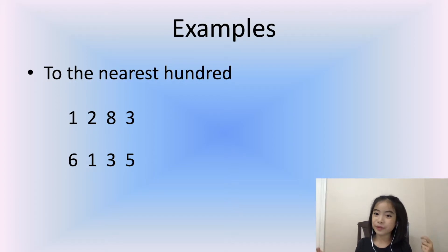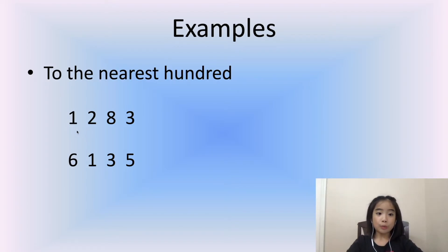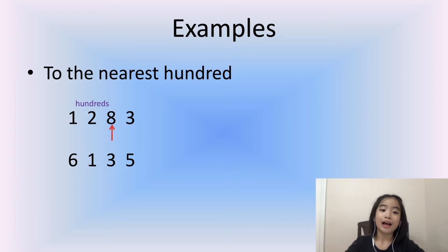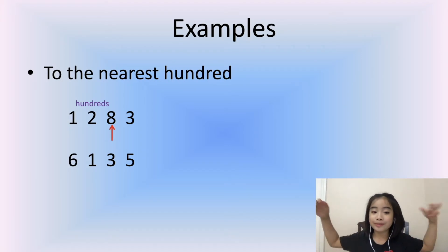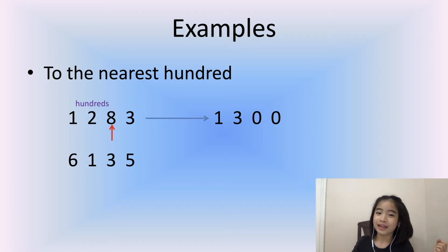Now let's look at a few more examples, but this time we're going to round to the nearest hundred — not ten. We have the number 1,283. The 2 is in the hundreds position, and the digit to the right — in the tens position — is 8. Since 8 is greater than 5, we round up to 1,300.